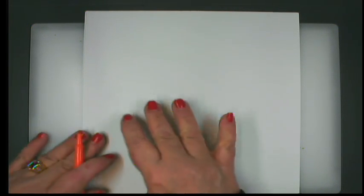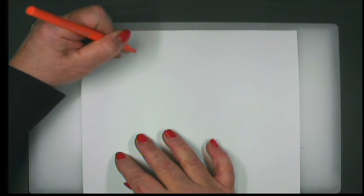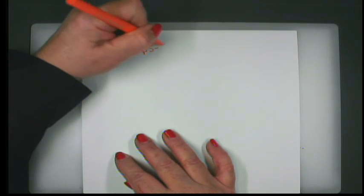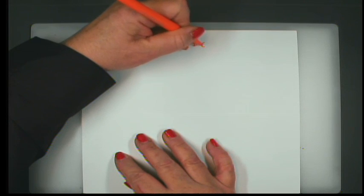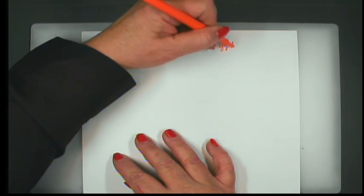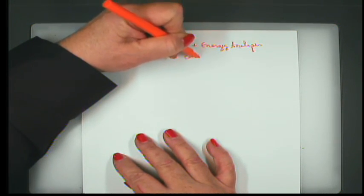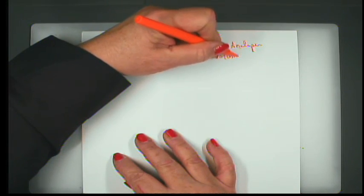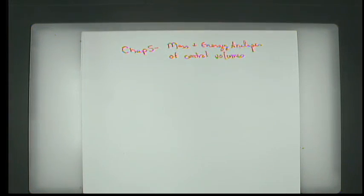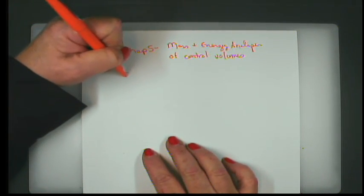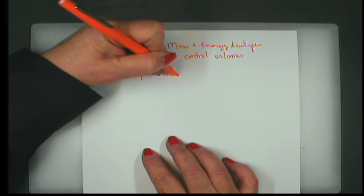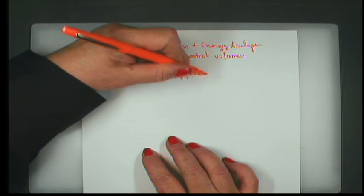Today is the 14th of March and we have just returned from spring break. We are going to begin chapter 5 in the thermodynamics textbook. The title of chapter 5 is Mass and Energy Analysis of Control Volumes. To orient you to where we are in this discussion, in chapter 4 we talked about energy analysis of closed systems.